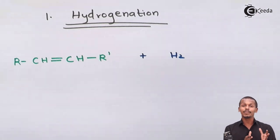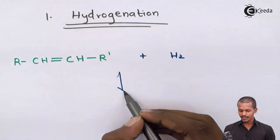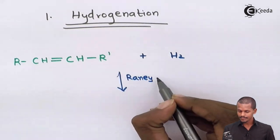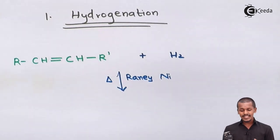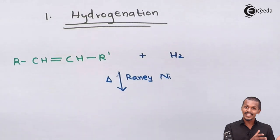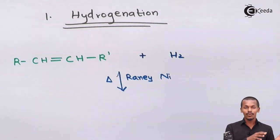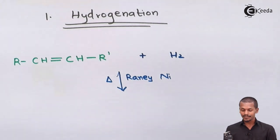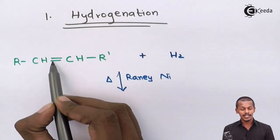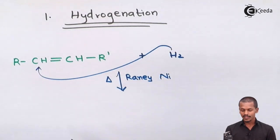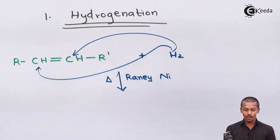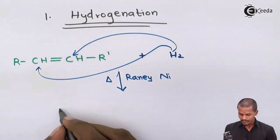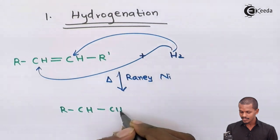The hydrogenation reaction won't take place on its own — we need to provide a catalyst such as iron and nickel, and a certain amount of heat. This reaction we have already encountered in the preparation of alkenes. In this process, one hydrogen attaches to one carbon while the other hydrogen attaches to the adjacent carbon, converting the double bond to a single bond to form RCH–CHR'.